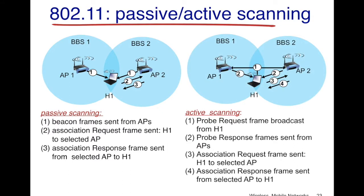In active scanning, the opposite methodology occurs. When a host enters a network, it sends out a broadcast message indicating it is here and wants to connect. All access points that receive this message reply back to the host. Once the host receives these response messages, it chooses the access point with the best signal quality and sends an association request. The AP then responds confirming that the host can send messages to the greater internet through the AP.